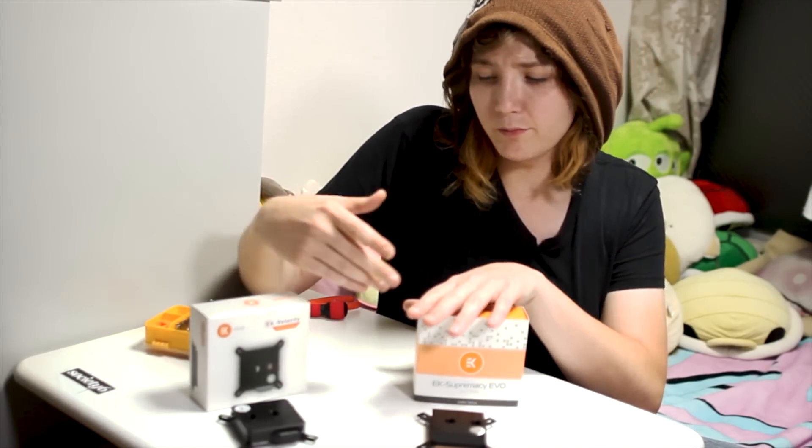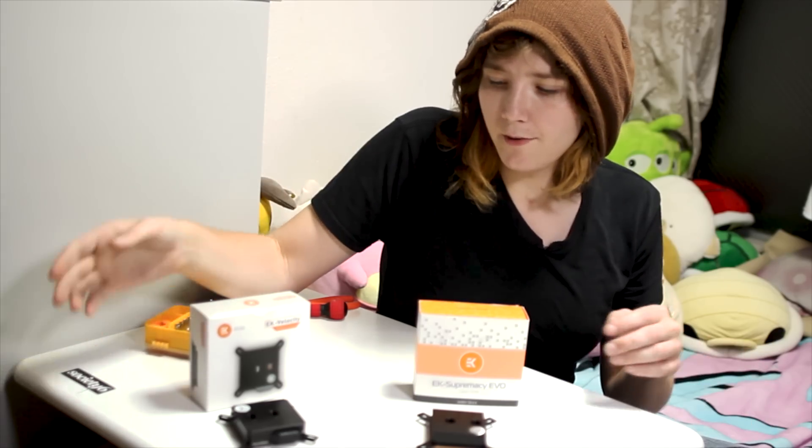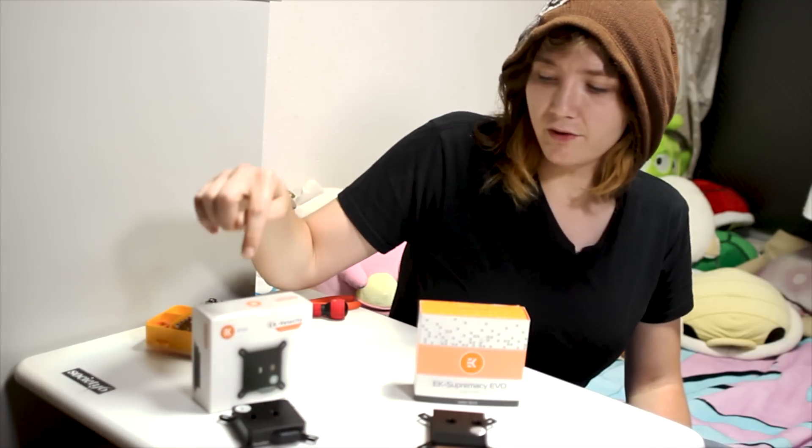Now, the Supremacy Evo comes in a million different variations and colors. It's been out forever. The Velocity, you know, it just came out. There's four main color schemes, basically. So you have the acetal and copper, which is what this is.